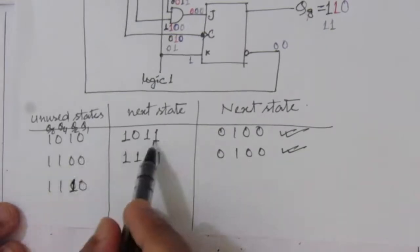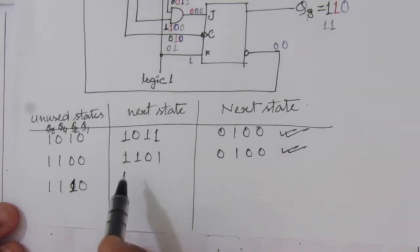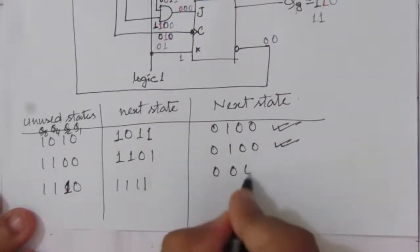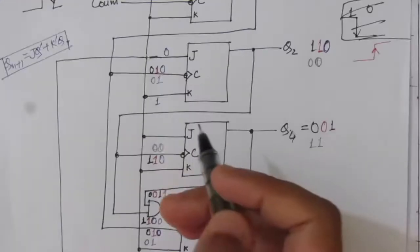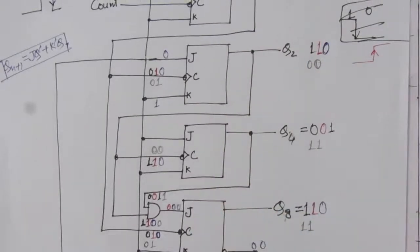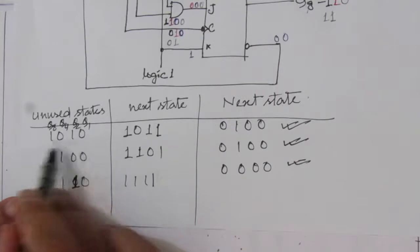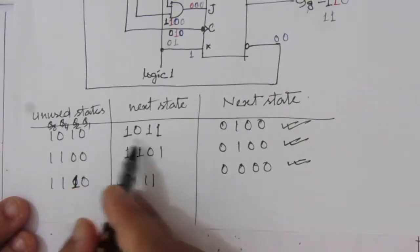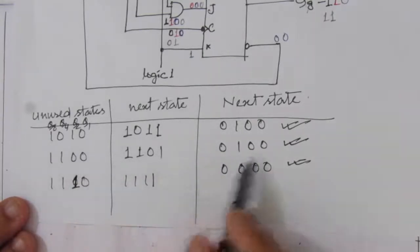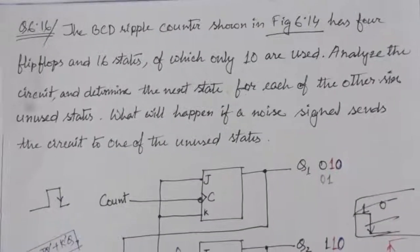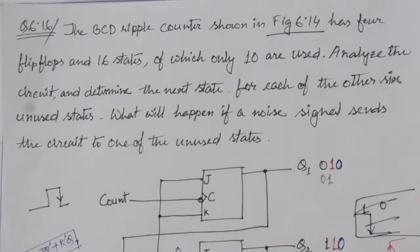We are left with states 14 (1110) and 15 (1111). Analyzing state 14, the next state is 1111 (decimal 15). From state 15, the next state is 0000 (decimal 0), a used state. Therefore, this BCD counter circuit is self-correcting: any unused state caused by a noise signal will eventually transition back to a valid used state. This completes the solution of problem 6.16.